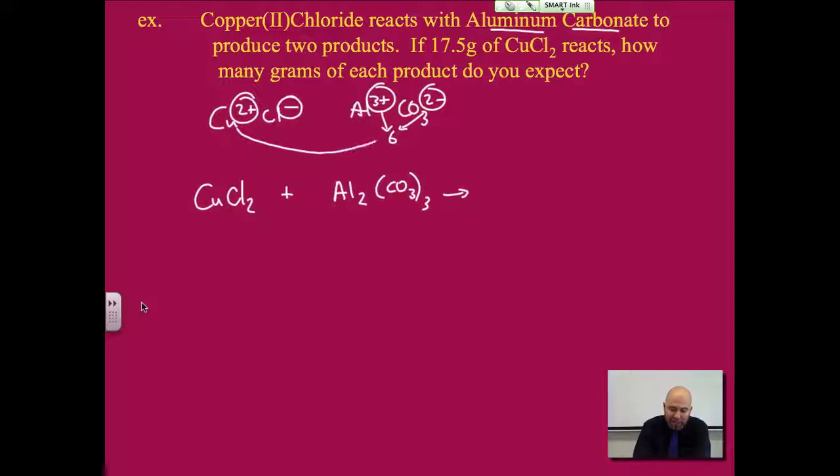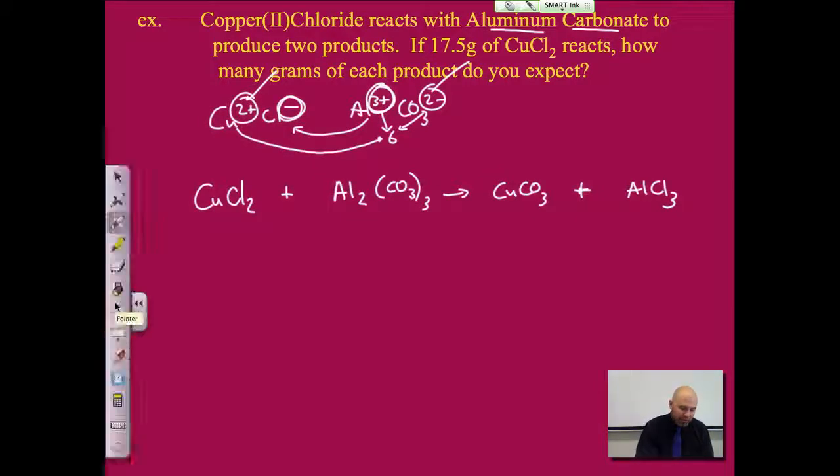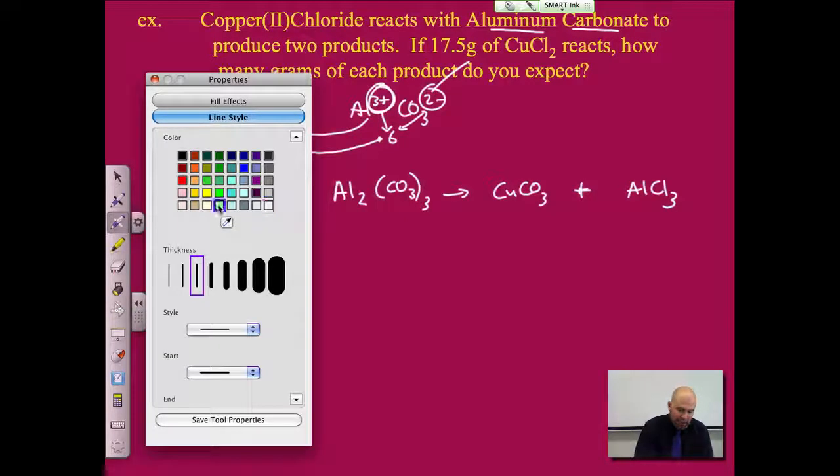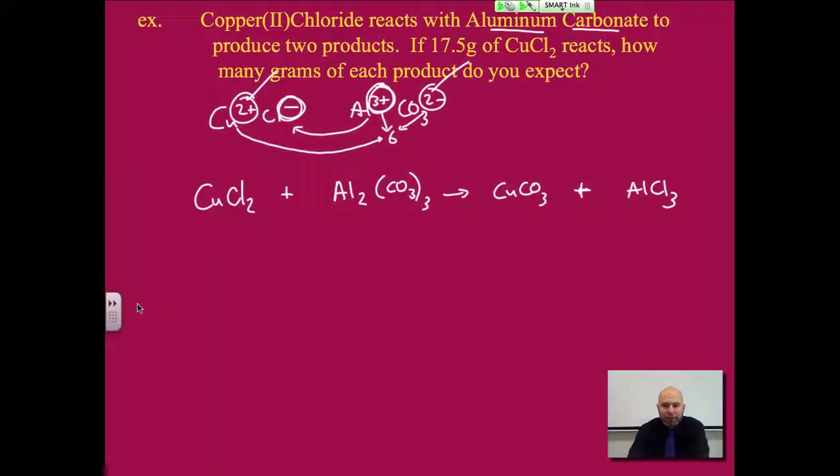but from knowing our previous chapter we know that this is a double replacement reaction. The Cu will get together with the CO3, so that's going to be CuCO3. Notice it's a 2 plus and a 2 minus. You only need one of each. Aluminum gets together with the chlorine. So AlCl3, the 3 plus, the 1 minus, when those get together. Obviously it's not balanced. We don't have the same on either side. So let's go ahead and do that.